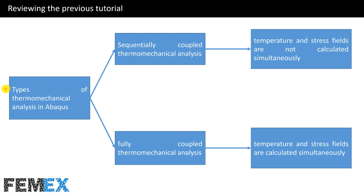Now I want to review the previous tutorial. There are two types of thermo-mechanical analysis in Abaqus: sequentially coupled thermo-mechanical analysis and fully coupled thermo-mechanical analysis. In sequentially coupled analysis, temperature and stress fields are not calculated simultaneously, whereas in fully coupled thermo-mechanical analysis, the temperature and stress fields are calculated simultaneously.